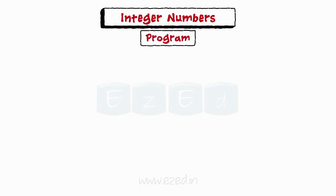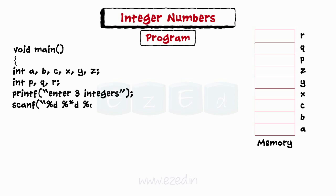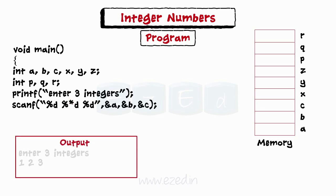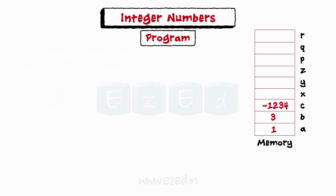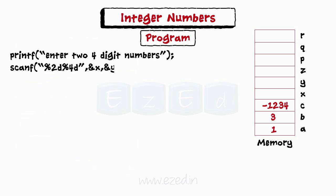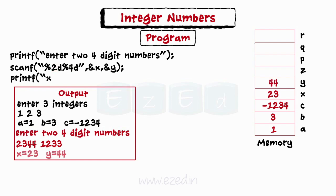Now we write a program showing formatted options for reading an integer. We start by declaring the main function followed by the variables. We ask the user to enter three numbers; the scanf line accepts input of three numbers and skips the second number. So when the user enters 1, 2, 3: 1 is assigned to A and 3 is assigned to B as 2 is ignored. Then we print them, noting that C is assigned a garbage value. We then ask the user to enter two four-digit numbers; the scanf line accepts input of two numbers, one of width 2 and the other width 4. When the user enters 2344 and 123, then 23 is assigned to X as its width is just two digits, and 44 is assigned to Y.